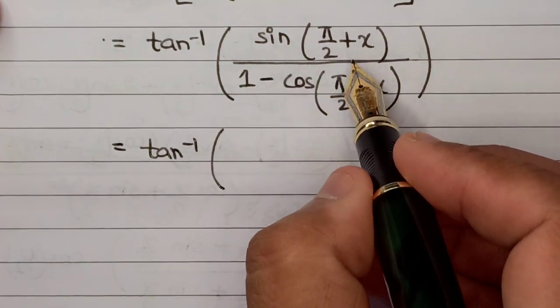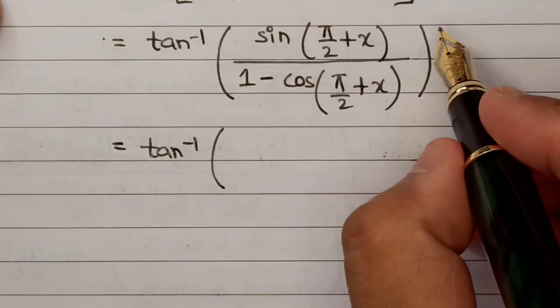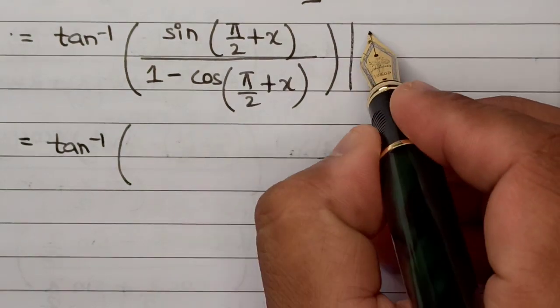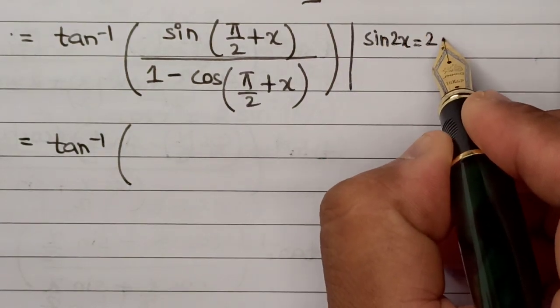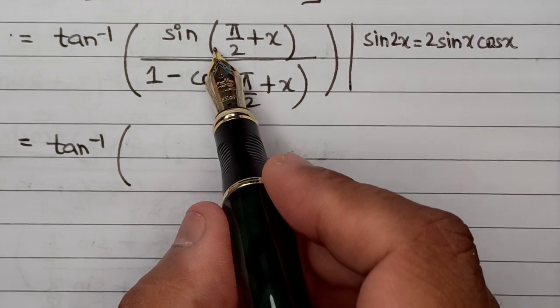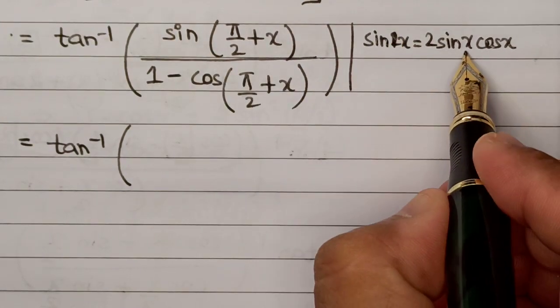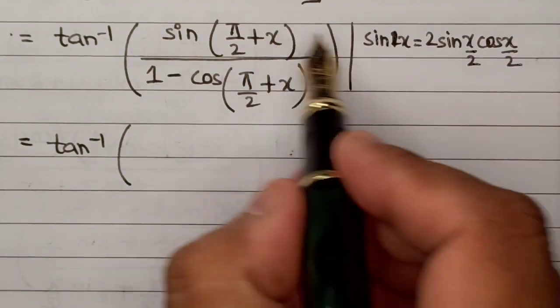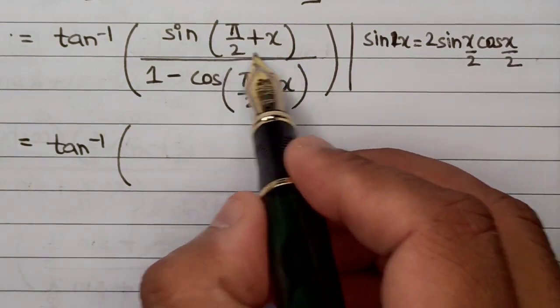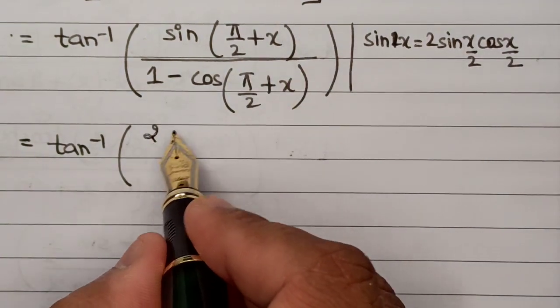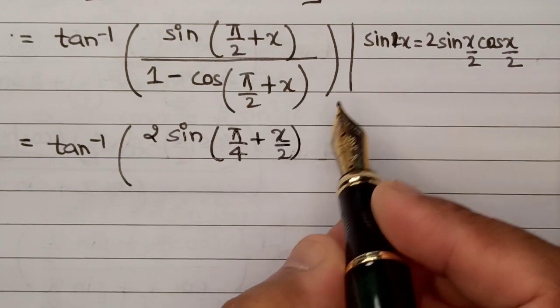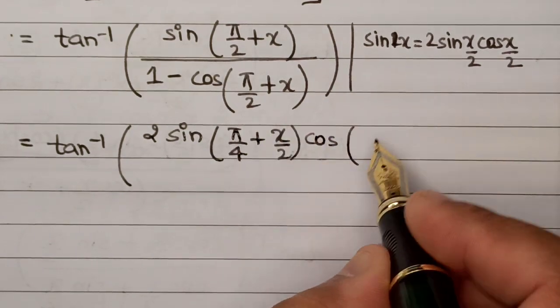Here we have sine of pi by 2 plus x. Now the formula that I have of sine 2x is basically 2 sine x multiplied by cos x, but here the value of sine does not encompass a coefficient of 2. That means I'll have to divide both the angles by 2. So in place of x, I basically have pi by 2 plus x. If I divide the angle by 2, this entire bracket gets divided by 2. So this becomes 2 sine of pi by 4 plus x by 2, multiplied by cos of pi by 4 plus x by 2.